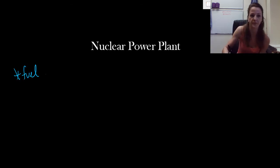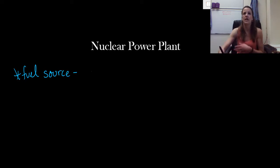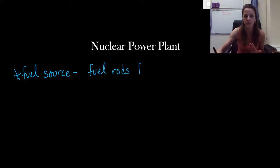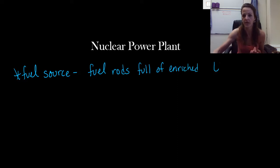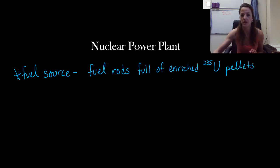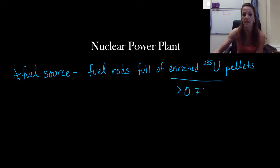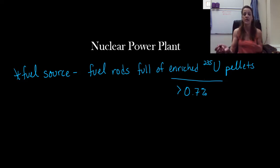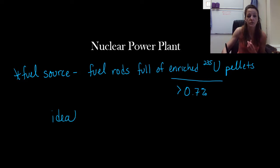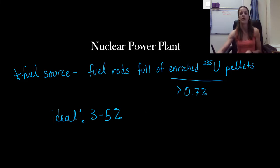Our fuel source is basically a bunch of different little pellets that we store in things called fuel rods — fuel rods full of enriched uranium-235 pellets. Enriched uranium-235 by definition means that it has greater than 0.7% of U-235. Usually the fuel source is uranium-238, but for a power plant, our ideal fuel source is actually anywhere between 3% to 5% enriched uranium.